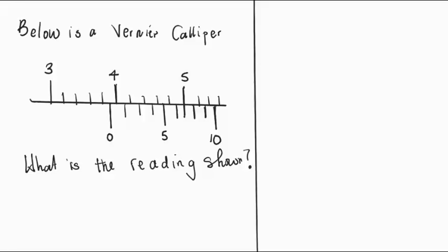We have the main scale and the Vernier scale, right? Which one is the main and which one is the Vernier? This scale that we are seeing here on top, that's a main scale.